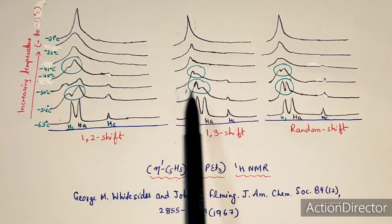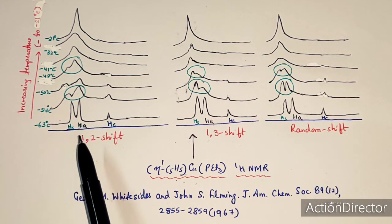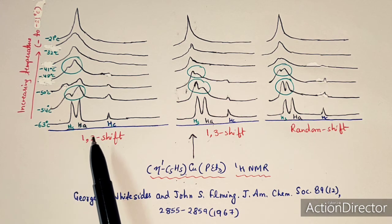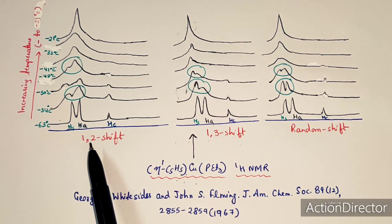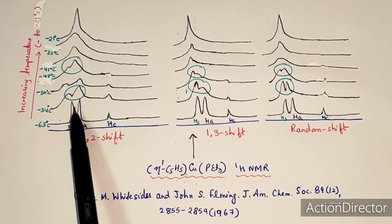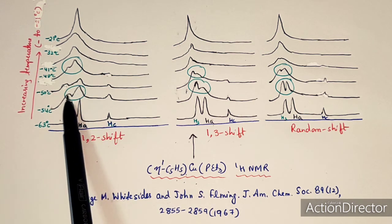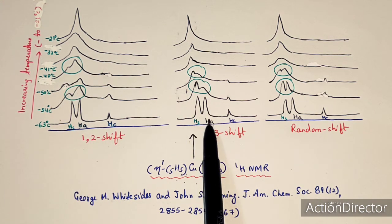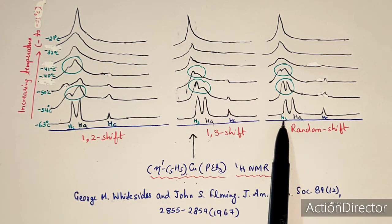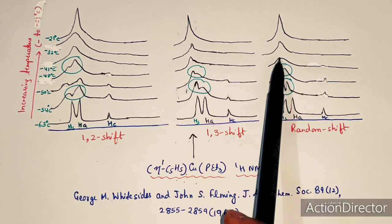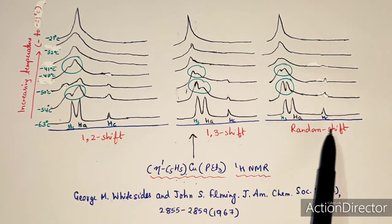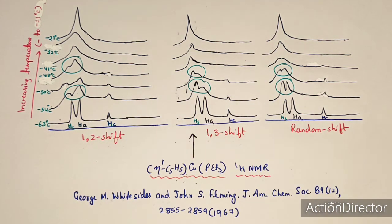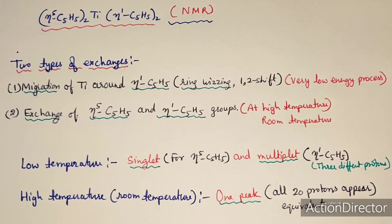With the help of NMR spectra, we can determine which kind of shifting is taking place in η1-cyclopentadienyl complexes. If HS peak collapses first, it is a 1,2-shift; if HA peak collapses first, it is a 1,3-shift; and if both peaks broaden simultaneously, it is a random shift.